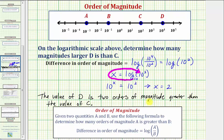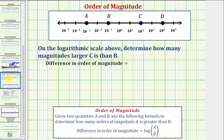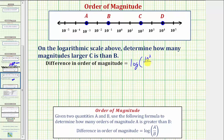Let's look at a second example — same question, but now we're asked to determine how many magnitudes larger c is than b. Notice the value of c is ten to the second, and the value of b is ten to the negative one. So the difference in the order of magnitude is going to be equal to the common log of the value of c, which is ten to the second, divided by the value of b, which is ten to the negative one.